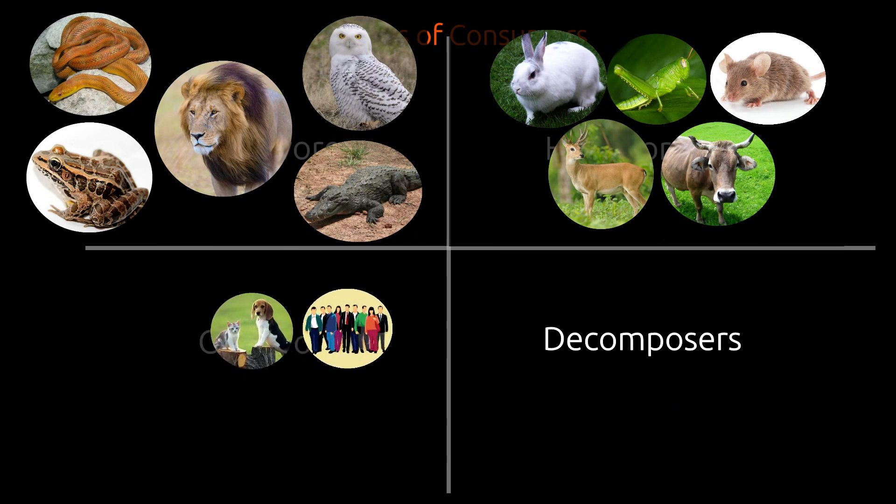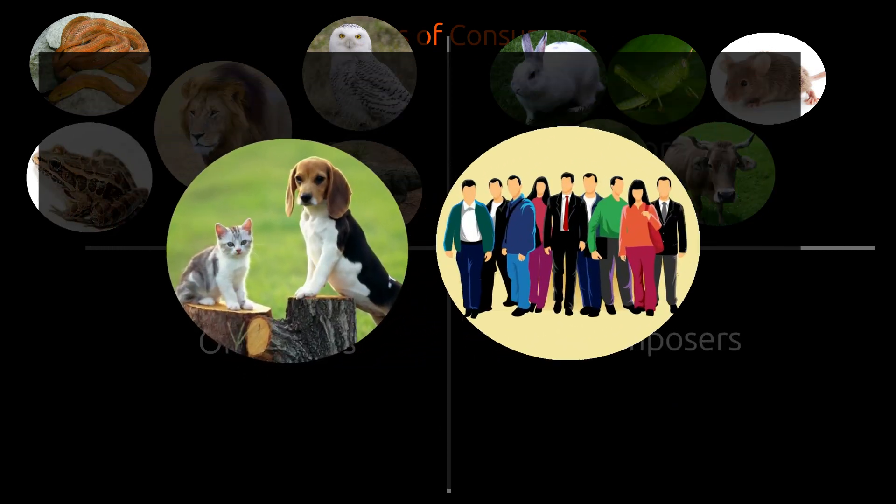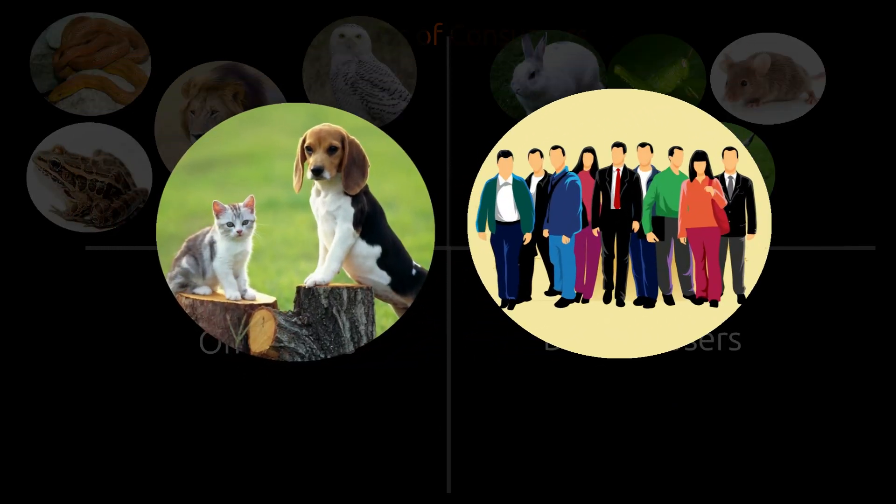Omnivores can eat both plants as well as animals. Dog, cat, and human fall into this category.